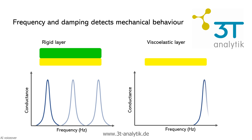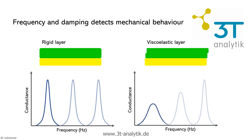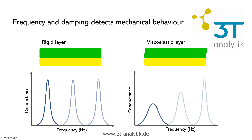Next, we add a viscoelastic layer — it behaves like both a solid and a liquid. As the layer thickens, the frequency drops again. But this time, the sensor's vibration causes the layer to deform, creating internal friction. This friction converts some of the energy into heat, which dampens the vibration. You'll see the peak become wider and lower — clear signs of energy loss and reduced vibration quality.